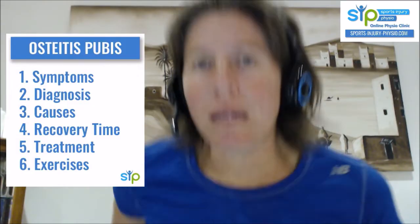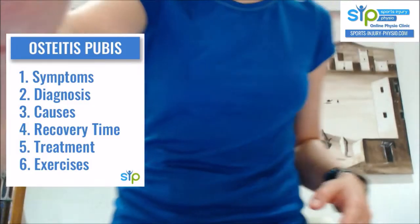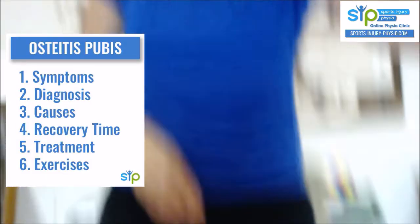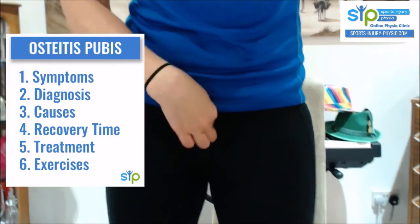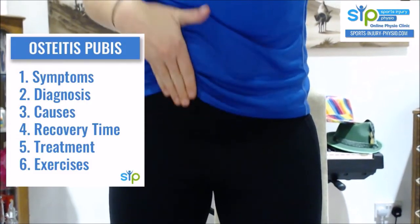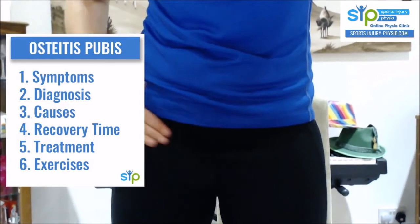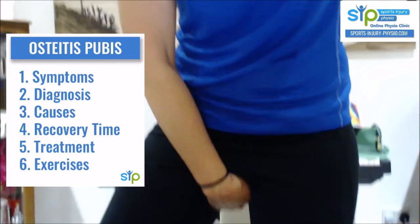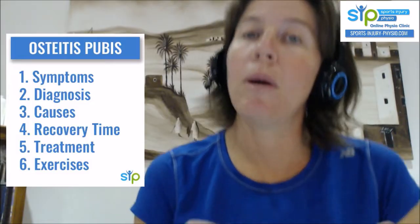There are quite a few different aches and pains you can get with osteitis pubis. Sometimes the pain can come on gradually over time, other times it's a sharp pain that you first feel and then it just continues. The pain can be at the pubic symphysis, where the main injury will be. Your pain can be there, but it can also be into the groin, up into the abdomen. It can transfer down into the adductors, and sometimes come right round into the back and deep into the buttock as well.